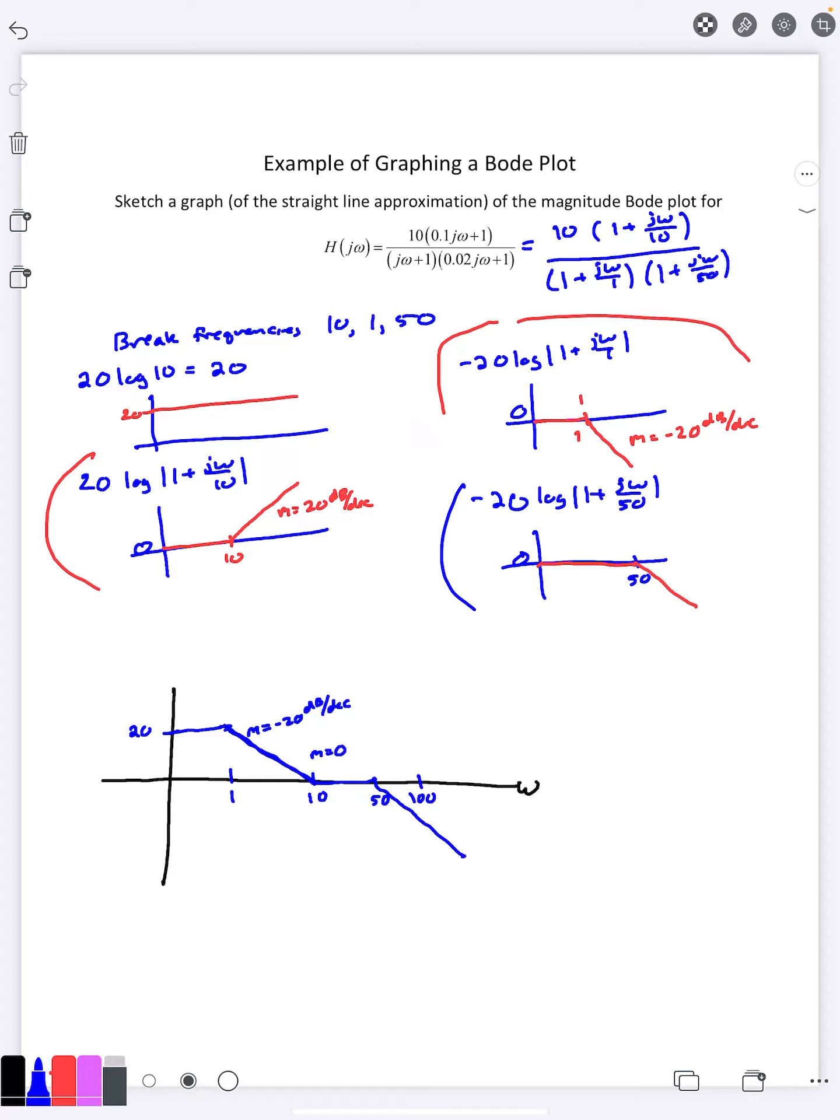This is the Bode plot that I would be looking for on this problem. It starts out flat at 20. It starts going down the slope of negative 20 at one, one decade later at 10, it's going to have a slope of zero, and then not a whole decade, only to 50. It's going to break down and have a slope of negative 20.